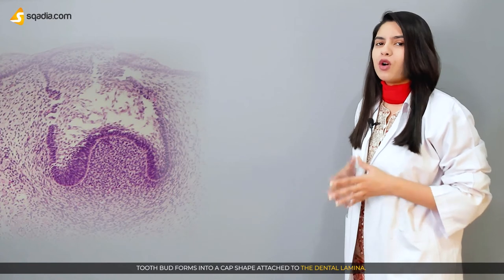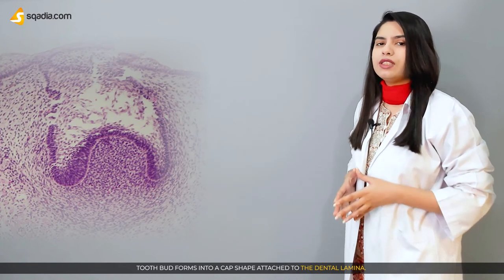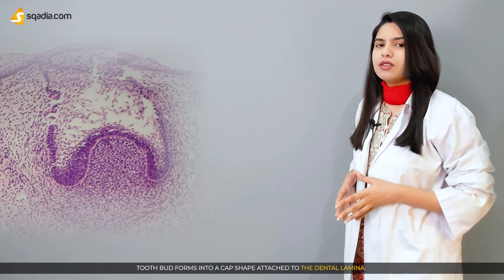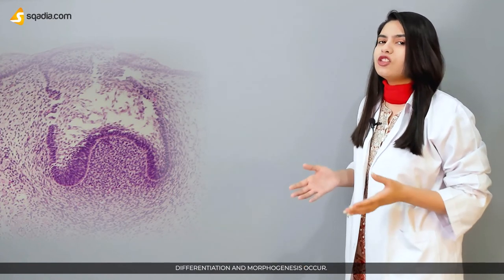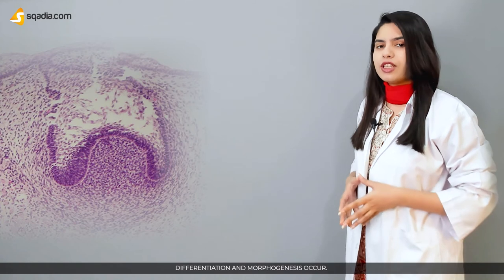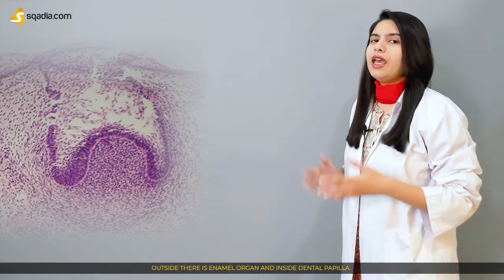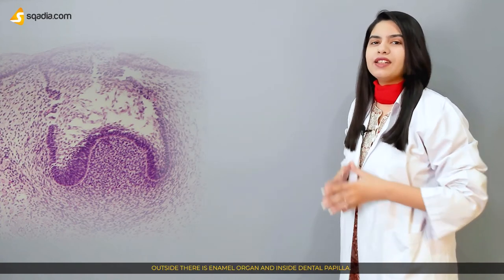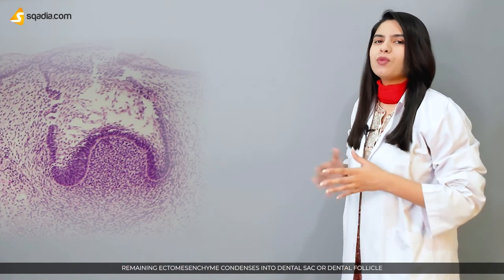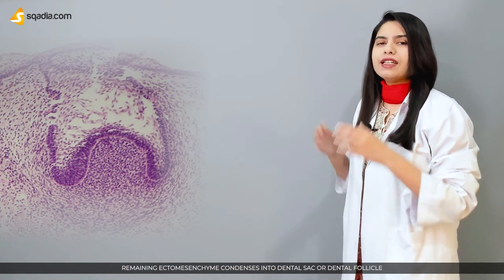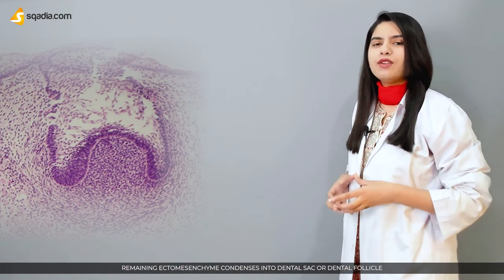In the cap stage, proliferation continues and the tooth buds form into a cap shape attached to the dental lamina. Differentiation and morphogenesis occur. On the outside there is an enamel organ, and inside is the dental papilla. The remaining ectomesenchyme condenses into the dental sac or dental follicle.